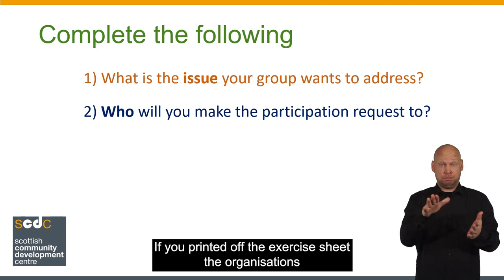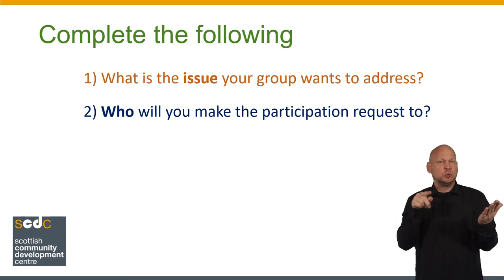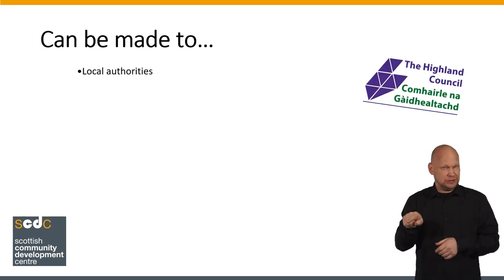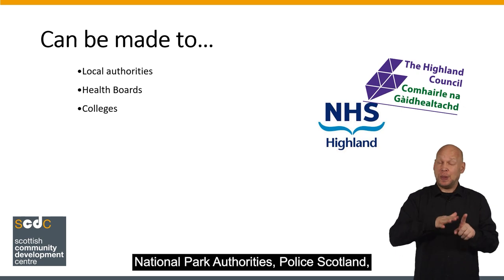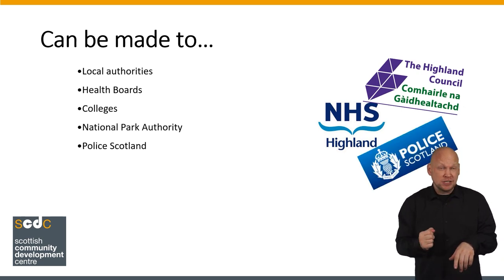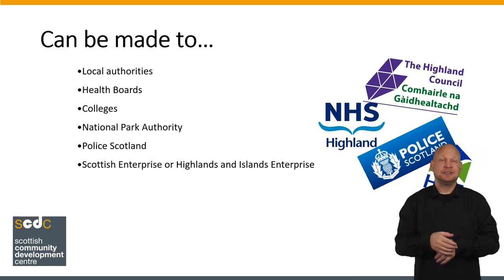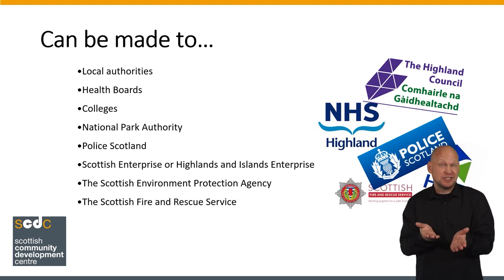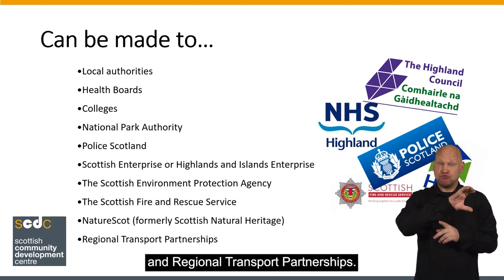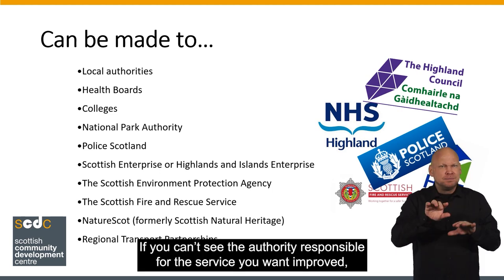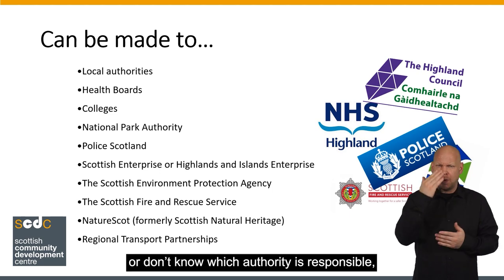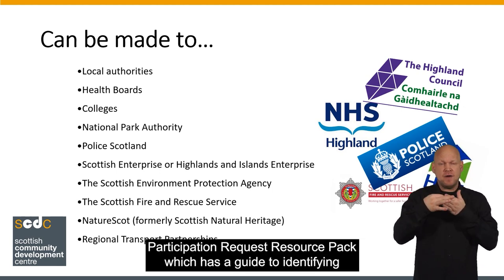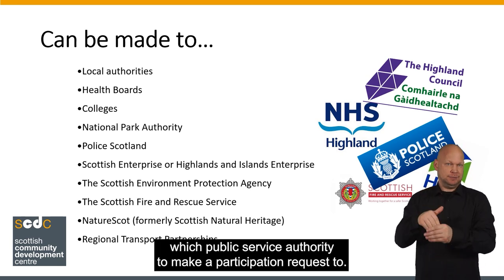If you printed off the exercise sheet, the organisations you can make it to are on the second page. But here's a quick reminder. They can be made to Local Authorities, Health Boards, Colleges, National Park Authorities, Police Scotland, Scottish Enterprise or Highlands and Islands Enterprise, the Scottish Environment Protection Agency, the Scottish Fire and Rescue Service, Scottish Natural Heritage, and Regional Transport Partnerships. If you can't see the authority responsible for the service you want improved, or don't know which authority is responsible, have a look at the SCDC participation request resource pack, which has a guide to identifying which public service authority to make a participation request to.